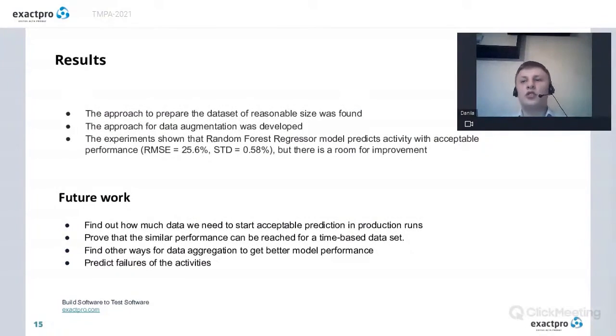So at the end of this presentation, I would like to sum up our main achievements which we got during the research. At first, we found the approach to prepare the dataset of reasonable size. Also, we developed an approach for data augmentation. Our experiments shown that a random forest regressor model predicts activity with acceptable performance. But still, there is a room for improvement here.